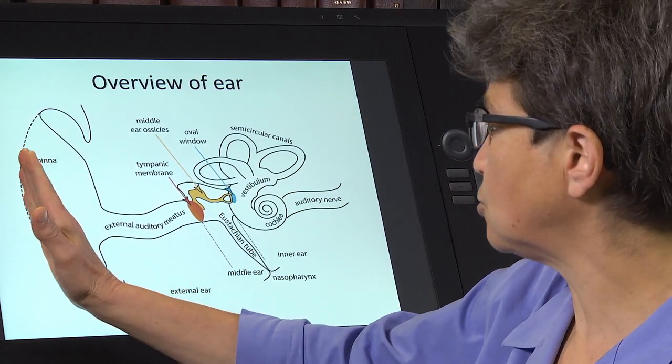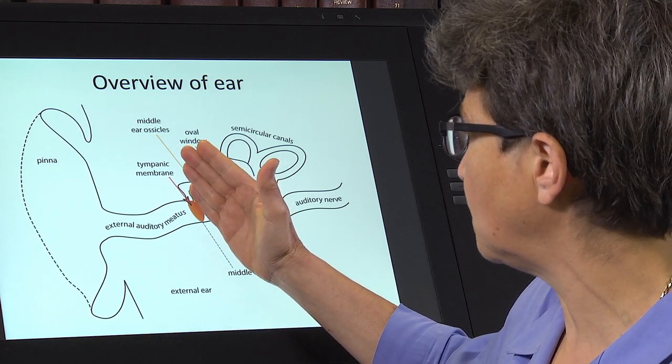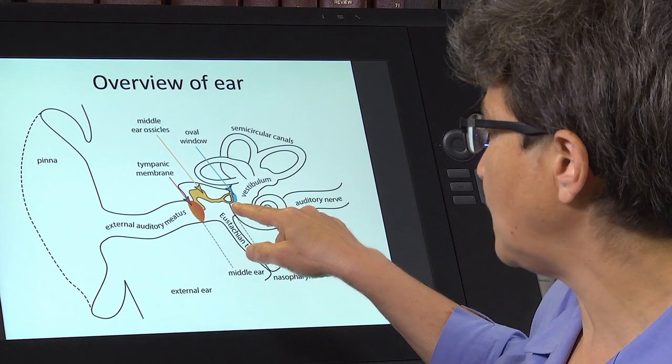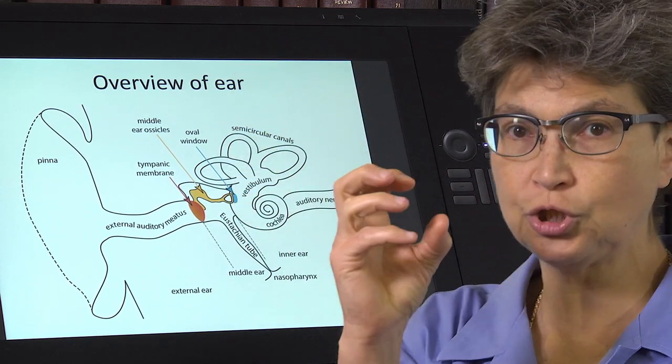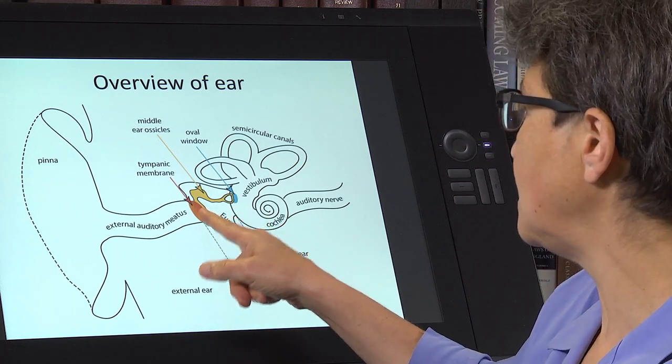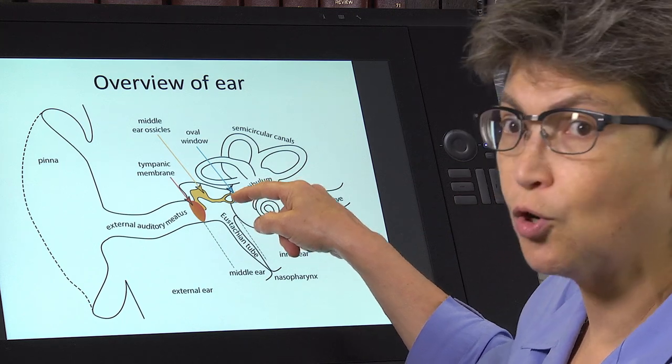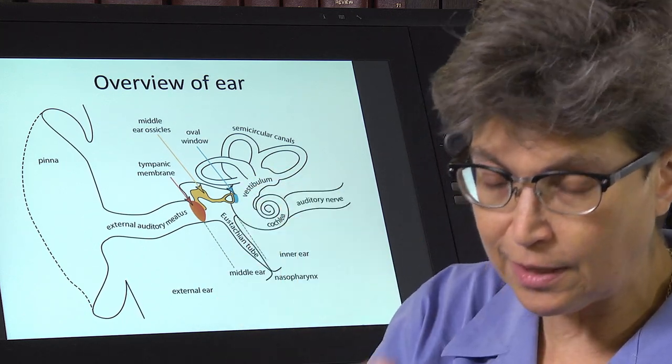So the external ear starts with the pinna, ends at the tympanic membrane, where it gives way to the middle ear, which is a little chamber, all isolated by itself, takes you from the tympanic membrane to the oval window.